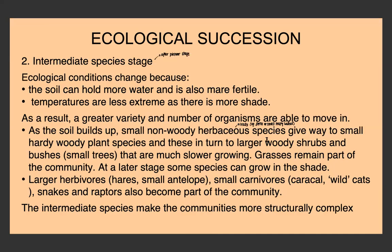At a later stage, some species can grow when there's a proper amount of shade. More herbivores enter — things like hares and small antelope — as well as small carnivores, which in an African community would be things like caracal and African wild cats. Snakes and raptors — large predatory birds — can also become part of the community. Because of the greater variety of species in this intermediate state, the community becomes more structurally complex.